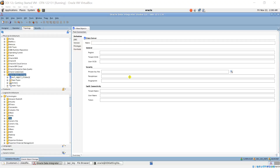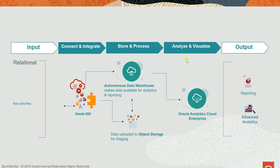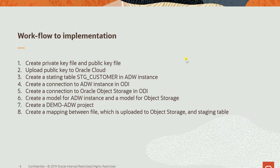Now I will talk about the data flow for implementing the ODI package. Step one: we generate a private key and public key. We use the private key and public key to connect ODI to Oracle Object Storage.